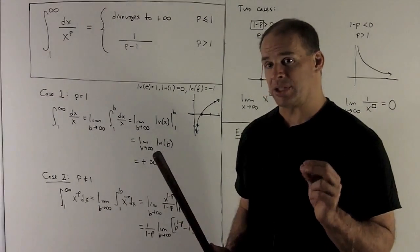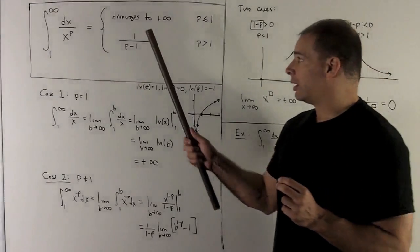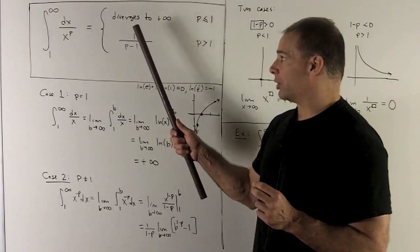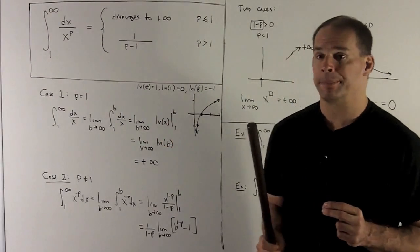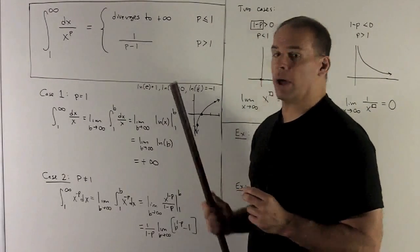We're going to have two cases for our answer. When p is less than or equal to 1, we're going to have the improper integral diverging to plus infinity. And if p is bigger than 1, we're going to get an answer 1 over p minus 1.